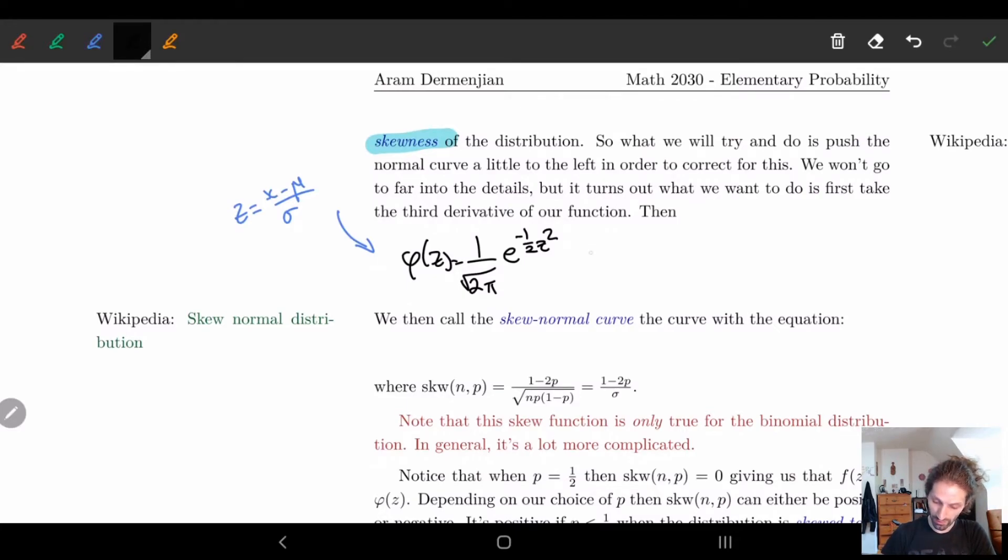After taking the third derivative, this is something that you should be able to do, we can find out that this is equal to (3z minus z³) times φ(z), as long as I did this correctly.